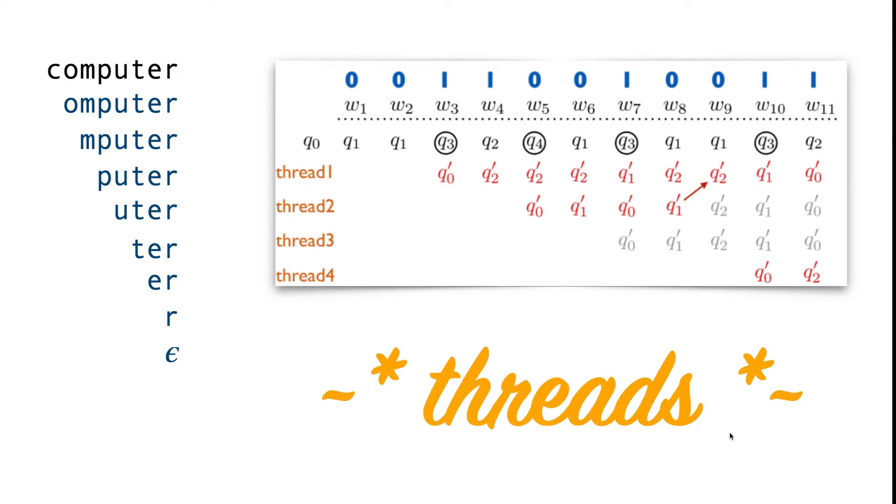Whenever you're doing a threading problem, it can be super helpful to give yourself some examples to look at. Let's go back to one of those examples from the start and look at the string cat. Cat is in SUFF(L), so we know that M_S should accept. Since M_S is dependent on M_L, let's look at a run of M_L on the string cat.